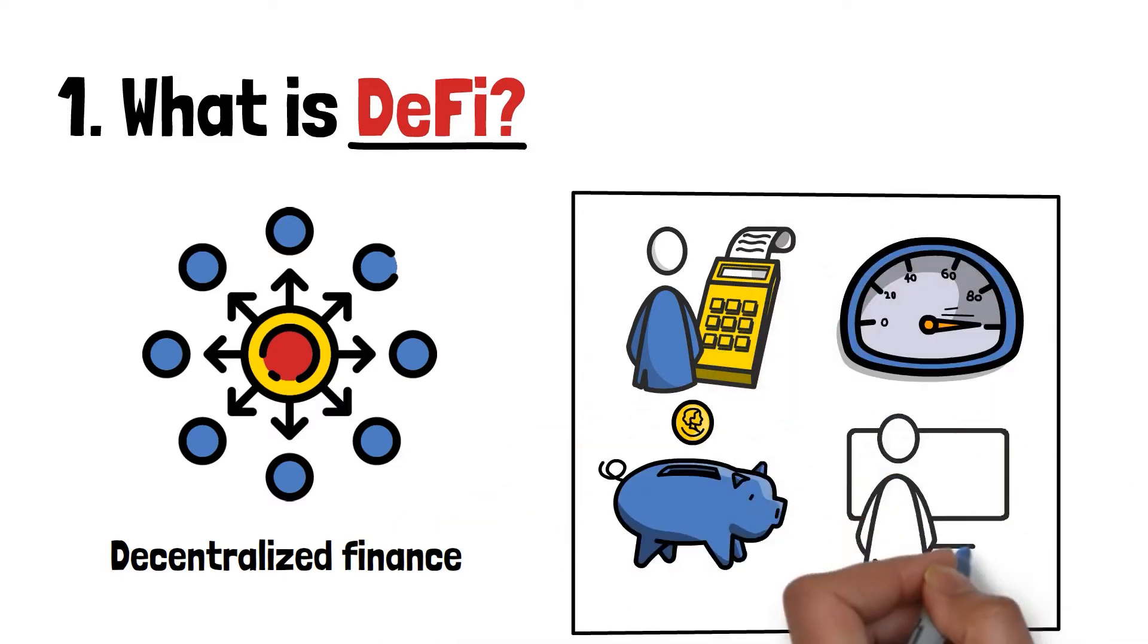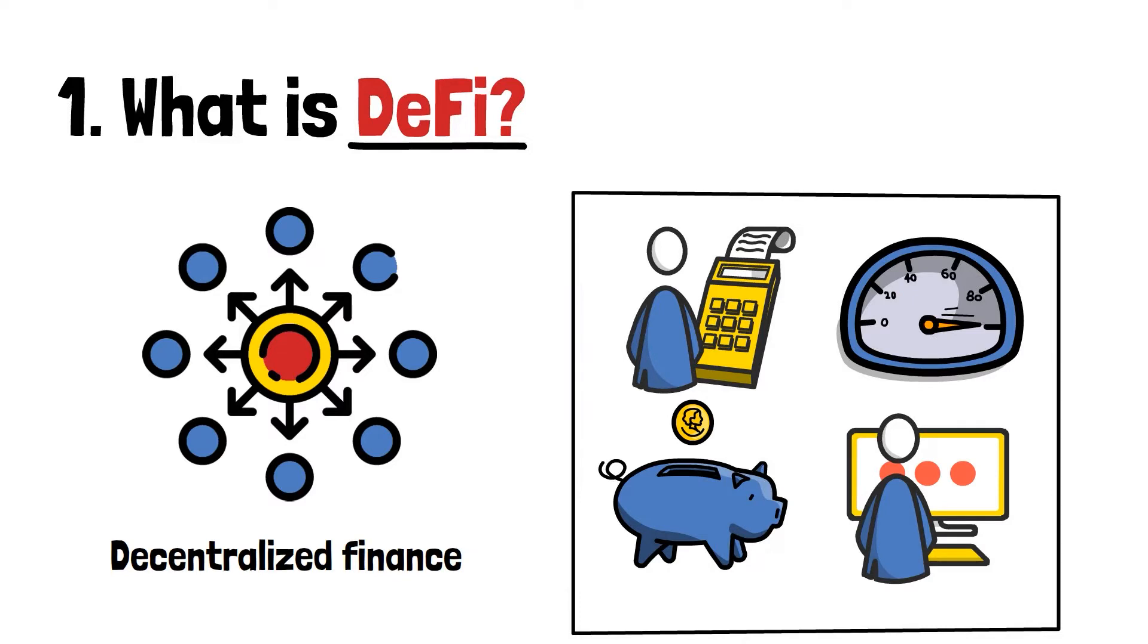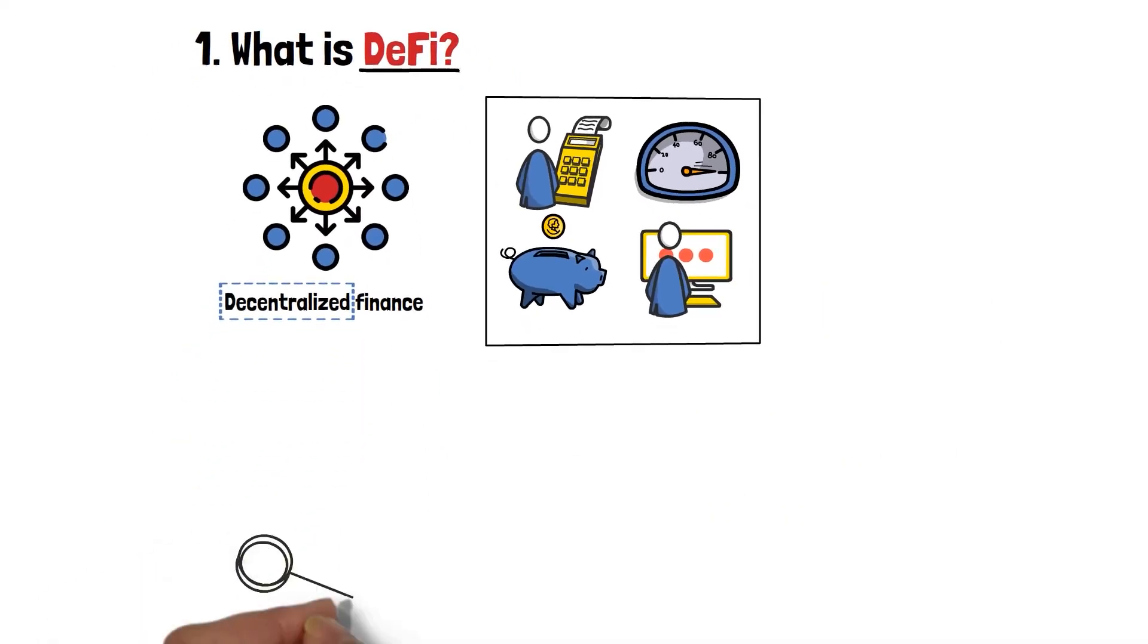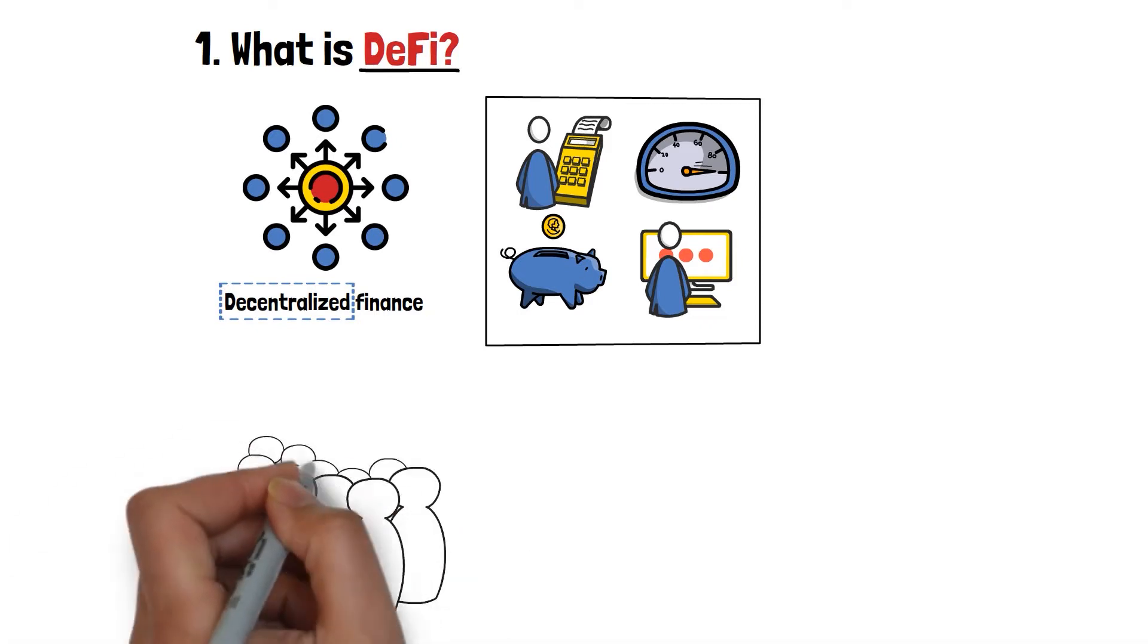The term decentralized simply means that there is no single authority behind the concept. Instead, it belongs to the masses.